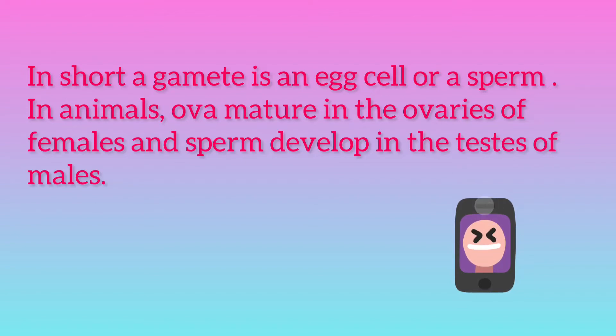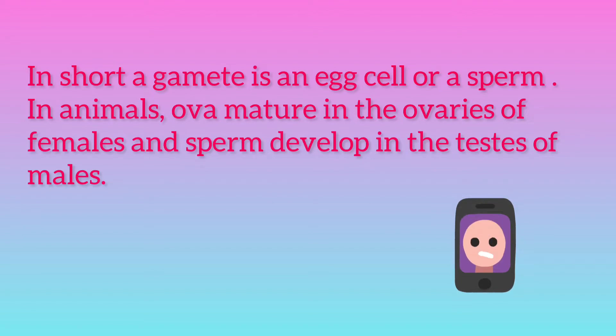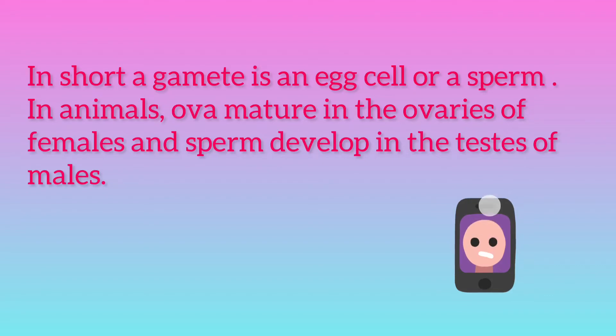In animals, ovum mature in the ovaries of females and sperm develop in the testes of males. During fertilization, a spermatozoa and an ovum unite to form a new diploid organism.